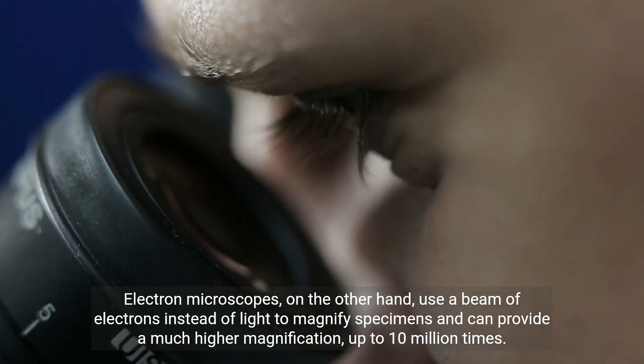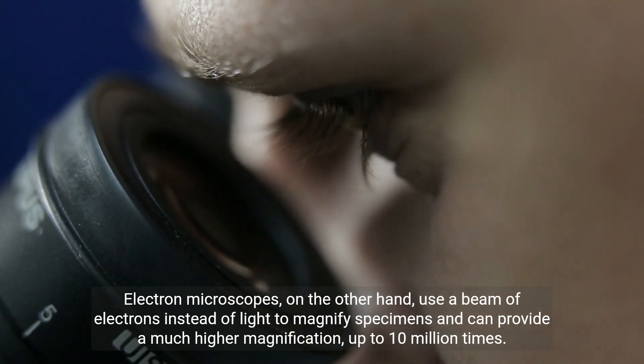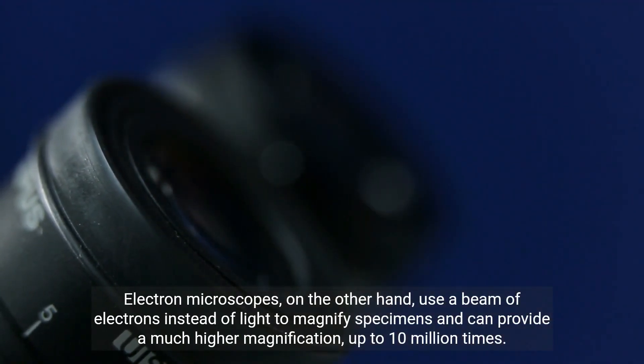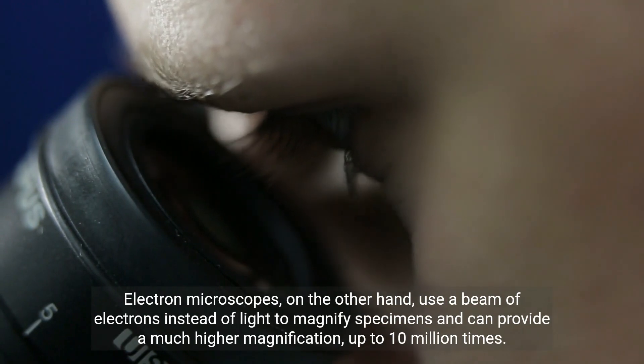Electron microscopes, on the other hand, use a beam of electrons instead of light to magnify specimens and can provide a much higher magnification, up to 10 million times.